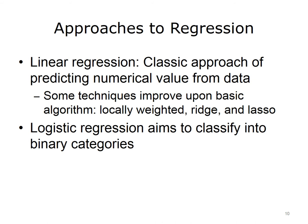There are likewise a number of different approaches to regression. Linear regression is a classical approach of predicting a numerical value from a set of data. There are various techniques that improve upon the basic algorithm of linear regression, such as locally weighted, ridge, and lasso techniques. Another type of regression is logistic regression, which is really more of a classification, in which we aim to classify data into binary categories.